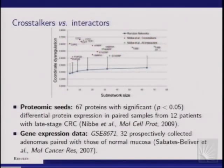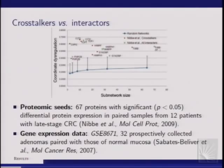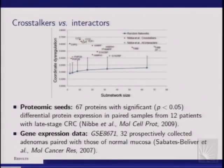We tested this idea using 67 proteomic seeds identified in a late-stage cohort, and used independent gene expression data collected from independent patients obtained from Gene Expression Omnibus. The red diamonds show coordinate dysregulation of cross-talker subnetworks, while the green squares show coordinate dysregulation of the interactor subnetworks of proteomic seeds. In many cases the red diamonds were the winner. For most proteomic seeds there was no significance at all, but in five or six subnetworks we observed that cross-talkers exhibited significant coordinate dysregulation.